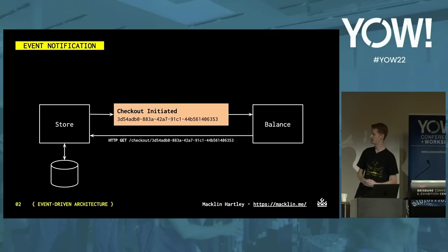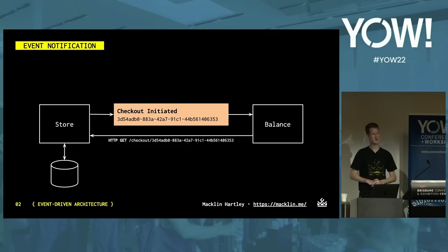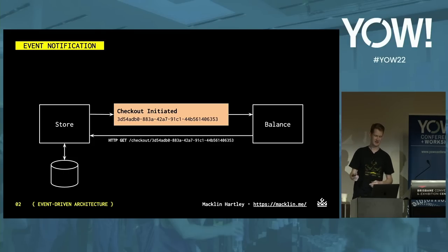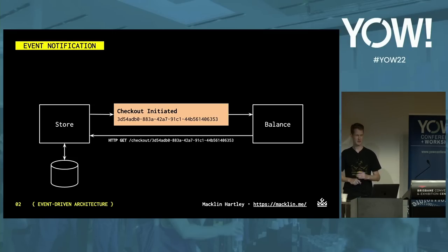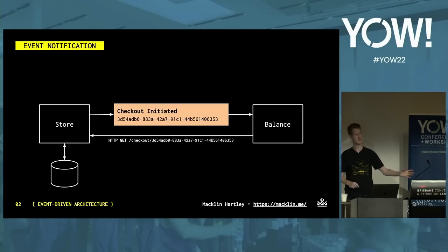Event notification looks like this: we send an event of something that happened, and all it gives us is the identifier of the thing that changed. It's up to the consumer to decide whether it needs to do anything about that. If the balance service gets this event to deduct the customer's balance, it has the ID of the checkout that was created. So it'll probably need to go back to the store and ask which customer, how much, and which avatar — the balance must query the store for more checkout details. The source of truth is the store database.